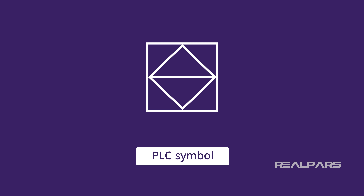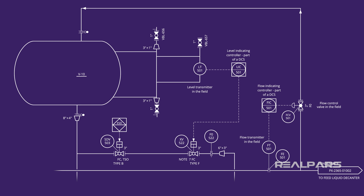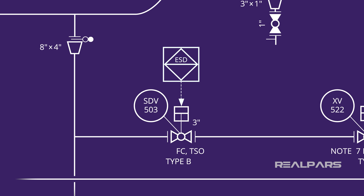PLC symbols don't show up on P&IDs nearly as often as DCS symbols, but when they do show up, they are drawn as a diamond inside a box. All you have to know is that the symbol represents a software instruction to perform some function in the plant. For example, the PLC symbol on our P&ID indicates that the SDV503 valve is operated by the emergency shutdown software instruction written in the PLC program.